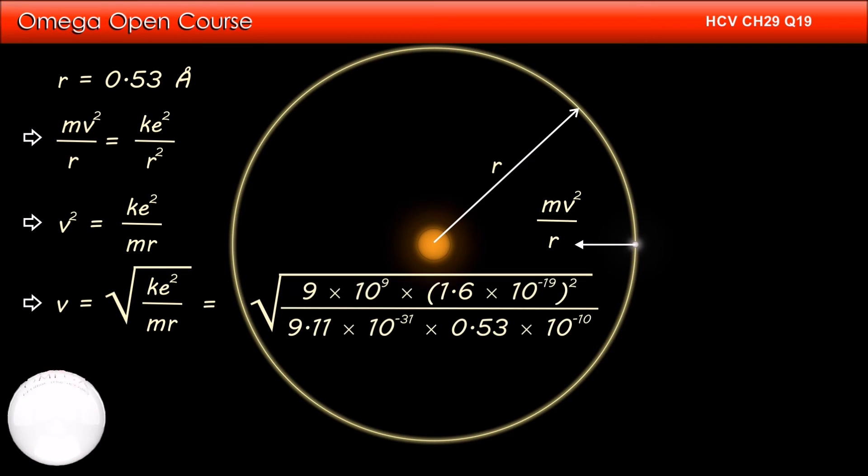Putting the values, we get v is equal to root under 9 into 10 to the power 9 into 1.6 into 10 to the power minus 19 square divided by 9.11 into 10 to the power minus 31 into 0.53 into 10 to the power minus 10.